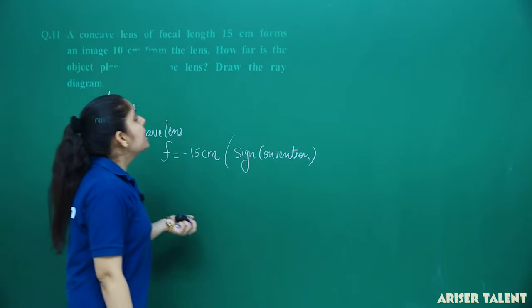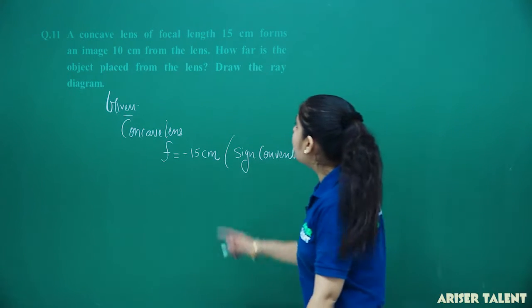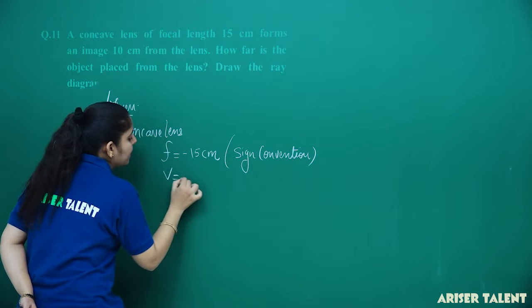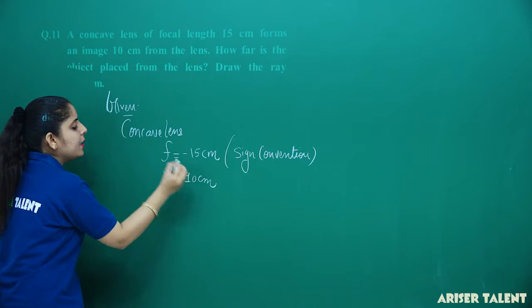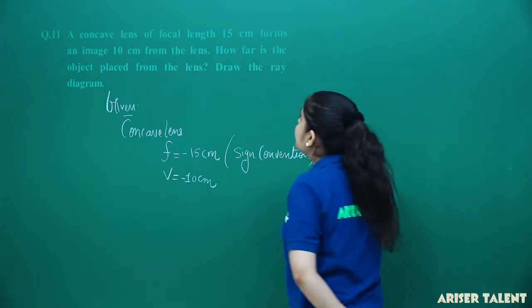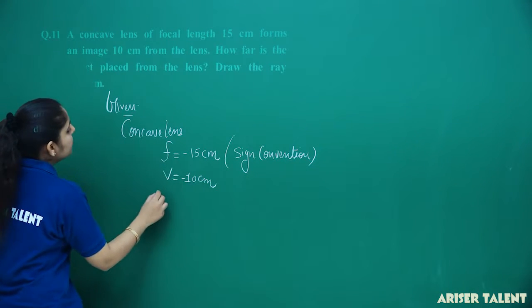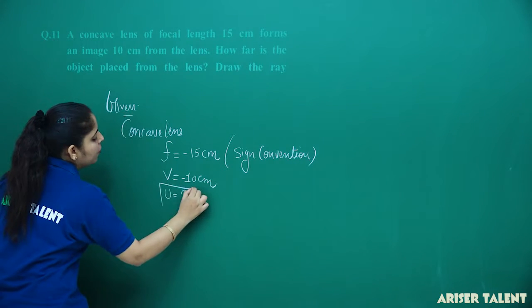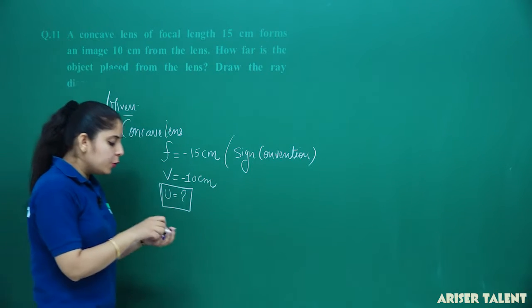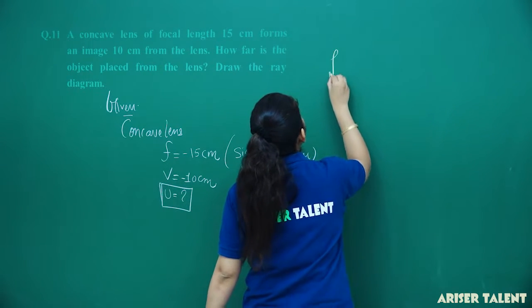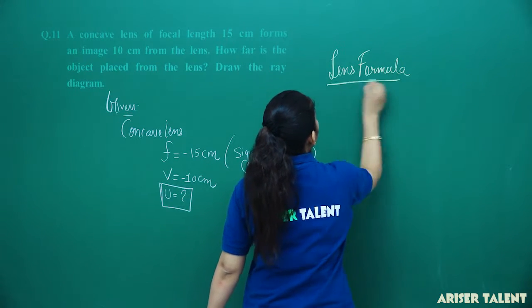The image is formed at a distance of 10 centimeter from the lens. For a concave lens, V will be minus 10. We have to find how far the object is from the lens and draw the ray diagram. So we need to find U. Since F and V are given, we will simply apply the lens formula.